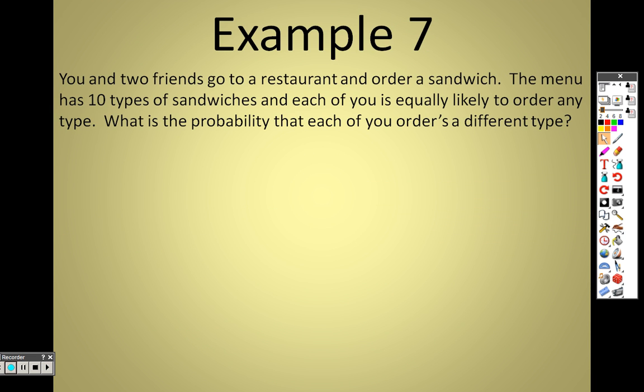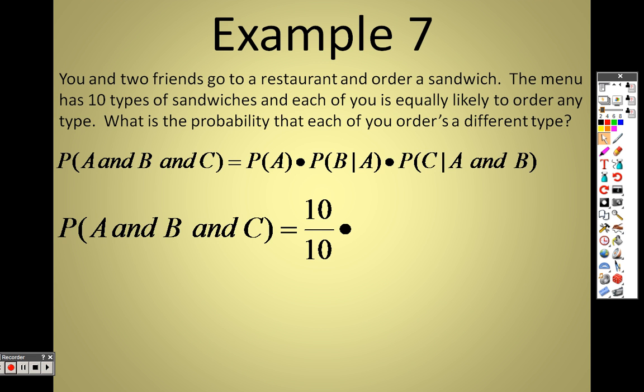Example 7. You and two friends go to a restaurant and order a sandwich. The venue has 10 types of sandwiches, and each of you is equally likely to order any type. What is the probability that each of you orders a different type? Well, here's basically what that means. First person walks in. The first person walks in. They have 10 choices out of 10 sandwiches. They can pick any sandwich they want, because they went first. Any sandwich they want, they can pick. No problem.